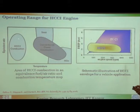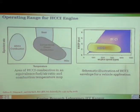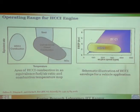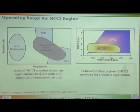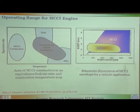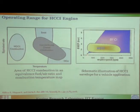The HCCI combustion operating window is this — the area of HCCI combustion in an equivalence fuel-air ratio and combustion temperature map. You are actually operating the engine much colder, and that is why it is called low temperature combustion, dealing with lean mixtures. If you look at the HCCI envelope for a vehicle application: this is the BMEP — brake mean effective pressure, representative of engine load — and on this axis you have the engine speed. For a conventional SI engine, you can have very high load and very high speed, and very low speed and low load as well.